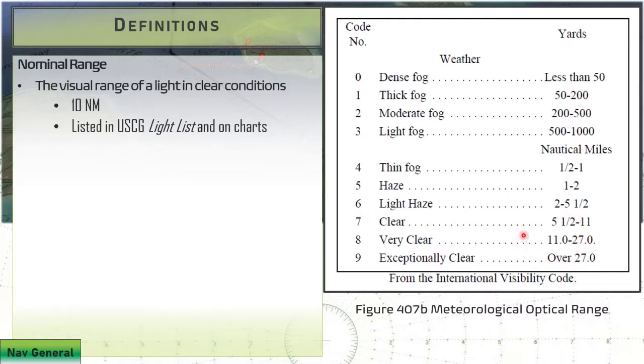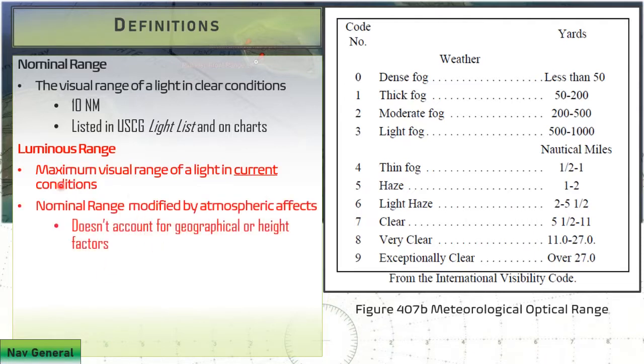Once we have the nominal range, we can calculate our luminous range. This is a modification of that nominal range based on what the current conditions actually are. Luminous range accounts for atmospheric effects but doesn't factor in our heights.